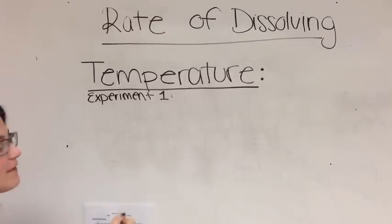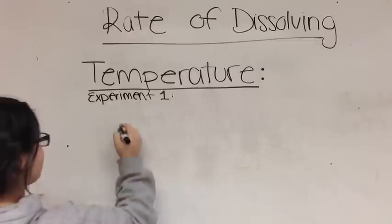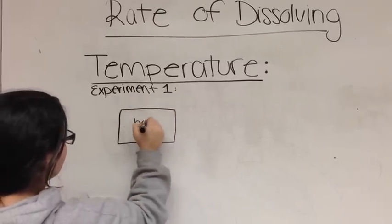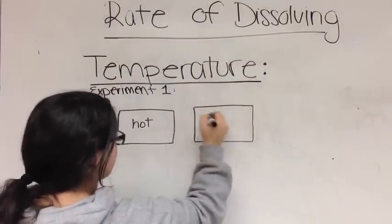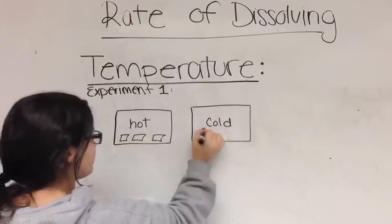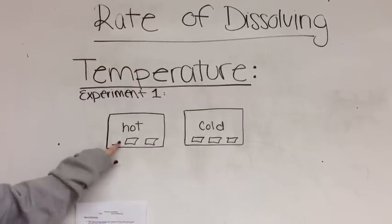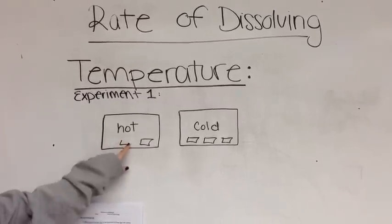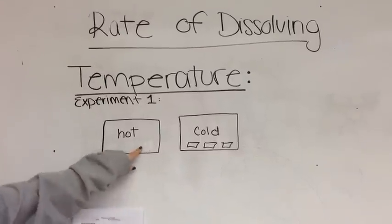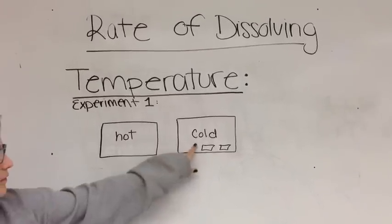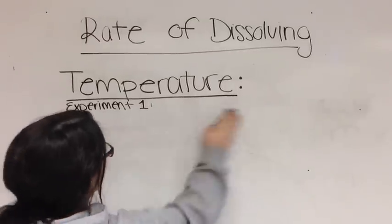As you can see, what we're going to do is we're going to have our two beakers of water. One will be hot and one will be cold. In each beaker, we'll have three pieces of sugar cubes. The hot water will start to dissolve the sugar cubes faster than the cold water. This demonstrates how temperature affects the rate of dissolving.